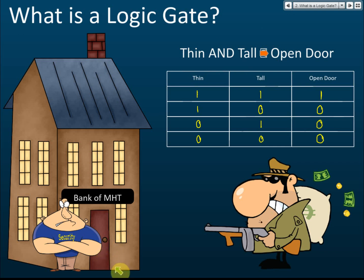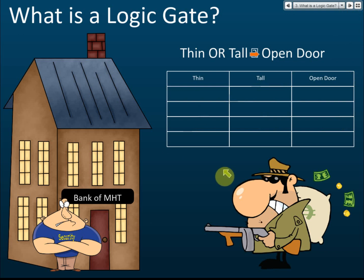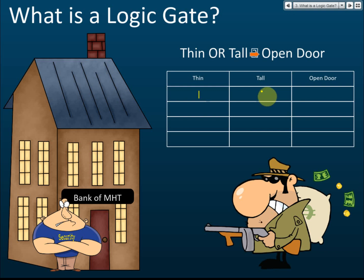The manager found that with the AND instruction, only a very small number of customers — those who are thin and tall — managed to get into the bank. So he changed his mind. This time he gave new instructions: if the customer is thin OR tall, then open the door. The first customer is thin and tall, so open the door. The second is thin but short — should the guard open the door?